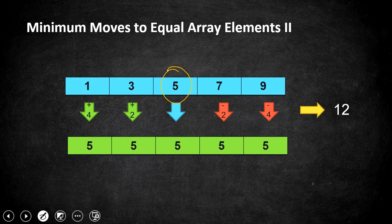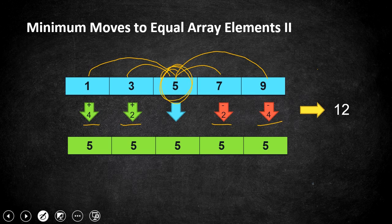Once sorting is done, we need to find the number of operations to bring all elements to the median value. Method 1: compute the absolute difference between each element and the median. For example, |5−1| = 4, |5−3| = 2, |5−7| = 2, |5−9| = 4. Summing these differences gives the total steps needed. This works when you have a median value available in your array.